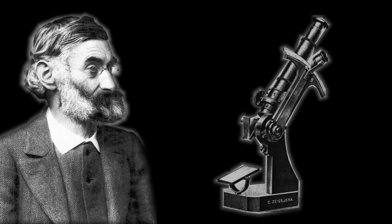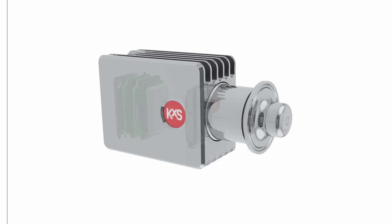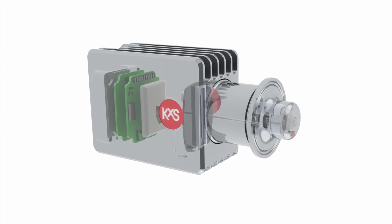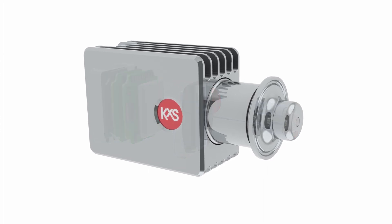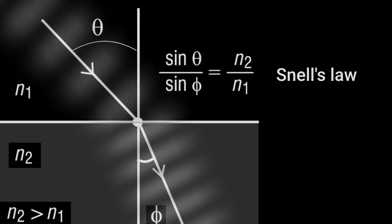One of his less-known inventions is the refractometer, an optical device to measure refractive index of solids or liquids. He invented the first refractometer in 1869. The principle of the Abbe refractometer is quite the same today, 150 years later, based on the physical phenomena of Snell's law.